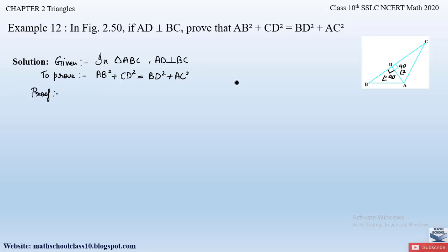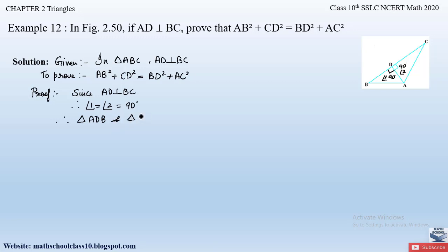Now let us write down the proof. Since AD is perpendicular to BC (given), therefore angle 1 = angle 2 = 90°. Therefore, triangle ADB and triangle ADC are right-angle triangles.